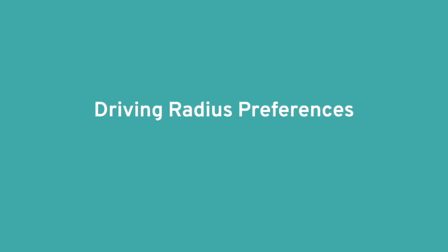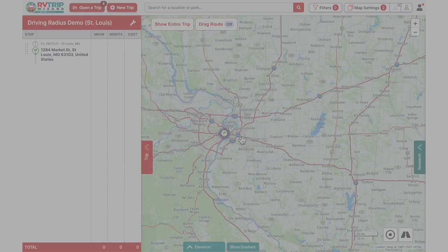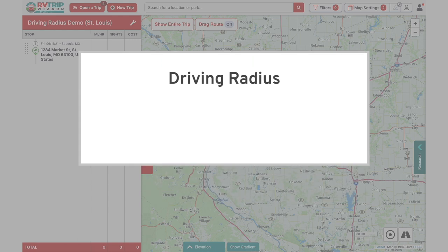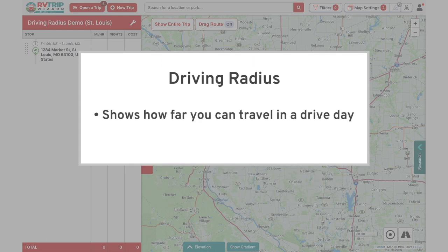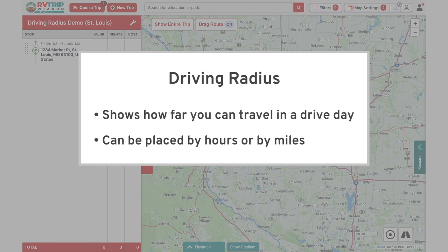RV TripWizard will place a radius or multiple radii centered around your starting point to help you visualize how far you'll be able to travel in a single drive day. You can choose to place your driving radius lines either by hours or by miles. Your choice really depends on how you think about your travel days — either in terms of how many hours you feel comfortable driving your RV in a day, or a certain number of miles you like to aim for.